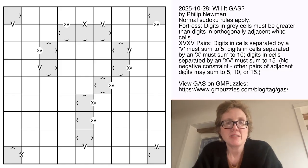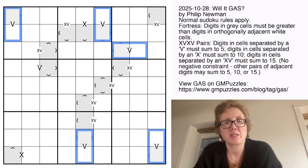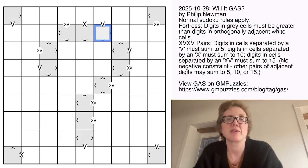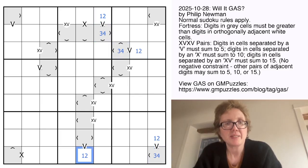So I'm going to start with the V clues, because they all appear on Fortress cells, and that's going to give us some low digits on Fortresses, which are going to be very restricted. So the Fortress digit has to be the higher of the two digits. So that's 3 or 4, and that's 1 or 2, because the 5 is either 1 plus 4 or 2 plus 3. Same thing here, here, and here.